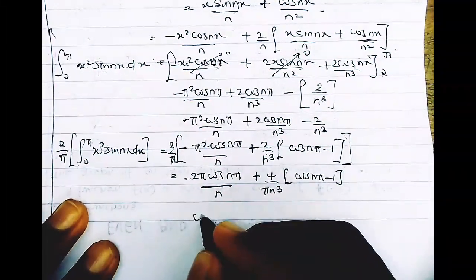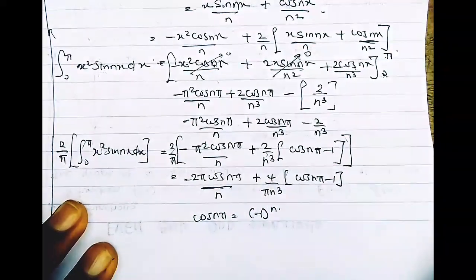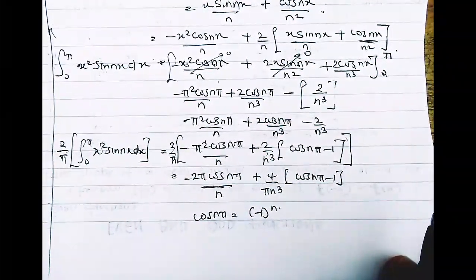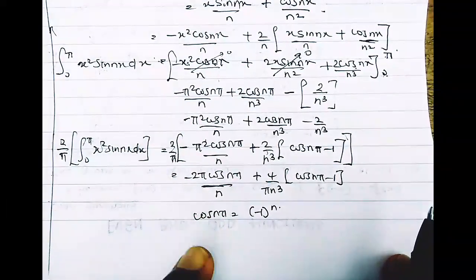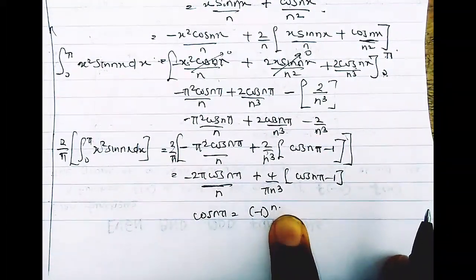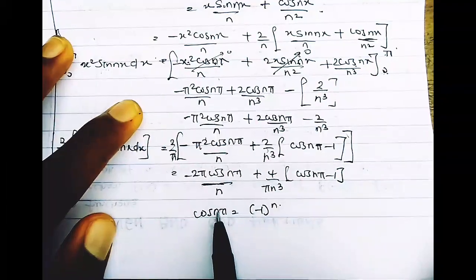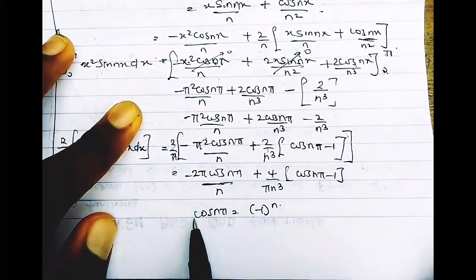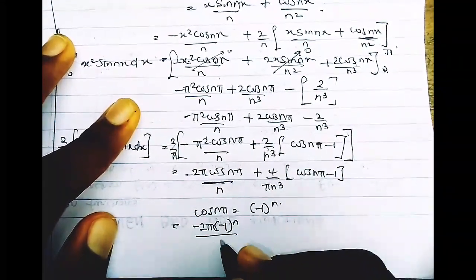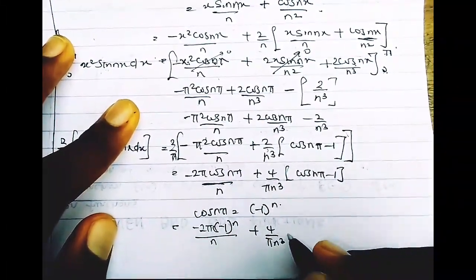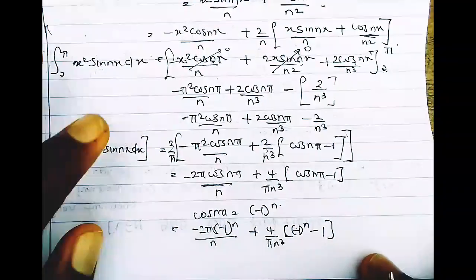There is a rule that says cos(nπ) = (−1)^n. You can verify: if n=2, cos(2π)=1, and (−1)²=1. This is the best way to remember values of cos(nπ) for n = 1, 2, 3, 4, 5, 6. Replacing cos(nπ) with (−1)^n: bn = −2π(−1)^n/n + (4/πn³)((−1)^n − 1).